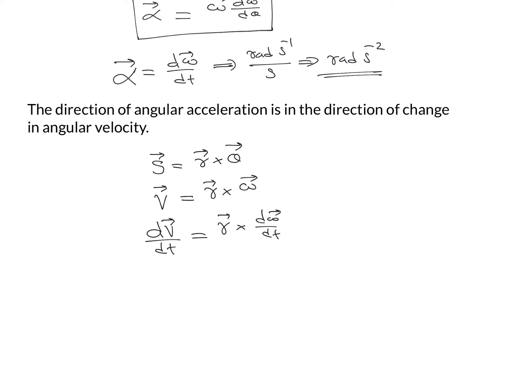dv by dt is the linear acceleration — specifically the acceleration responsible for change in magnitude of velocity, which is tangential acceleration. So the value of tangential acceleration equals the radius vector cross d omega divided by dt, which is angular acceleration. We use the equation: tangential acceleration equals r vector cross alpha, or a equals r into alpha, where a represents tangential acceleration.